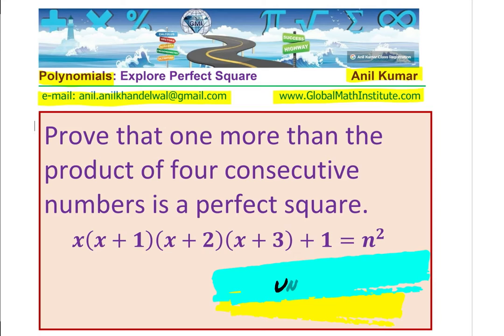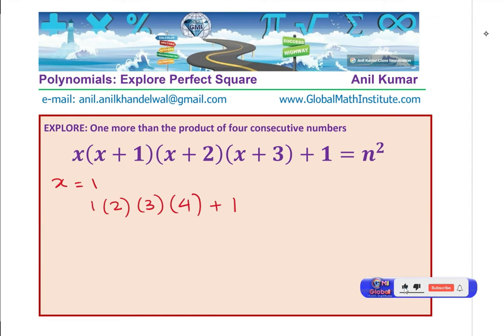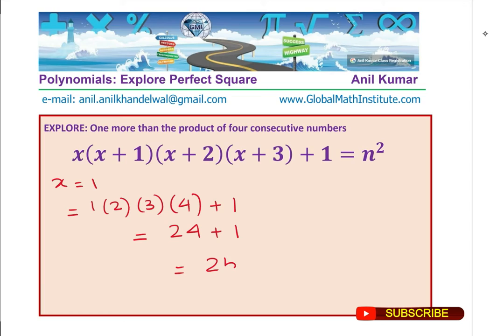We can first explore whether this statement can be true or not. Let us try with some values of x. That is going to be our strategy. Let us say that x is equal to 1. In that case, the numbers will be 1 times 2 times 3 times 4. These are the four consecutive numbers. We are going to add 1 to it. We get 2 times 3 which is 6 times 4 is 24 plus 1 equals 25. And we know that 25 indeed is equal to 5 squared. So it does make sense.